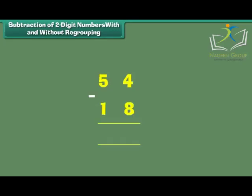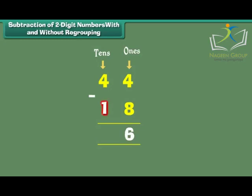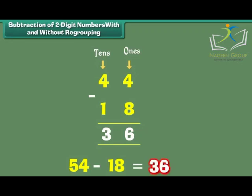What is 54 minus 18? 54 has 5 tens and 4 ones. We want to remove 8 ones. We regroup 1 ten as 10 ones. Now we have 14 ones and 4 tens. We remove 8 ones from 14 ones; we are left with 6 ones. We remove 1 ten from 4 tens; we are left with 3 tens. Therefore, 54 minus 18 is equal to 36.